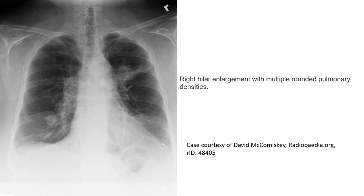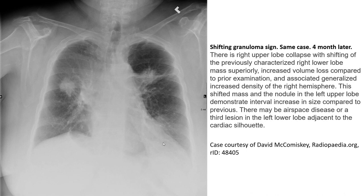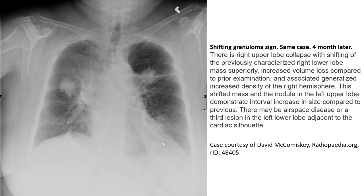In this case of right hilar enlargement with multiple rounded pulmonary densities, the follow-up chest ray shows right upper lobe collapse with shifting, previously characterized right lower lobe collapse with increased volume loss compared to the prior exam, and associated generalized increased density of the right hemithorax. There is a soft tissue mass and nodule in the left upper lobe demonstrating interval increase in size. There may also be airspace disease or a third lesion in the left lower lobe adjacent to the diaphragm.